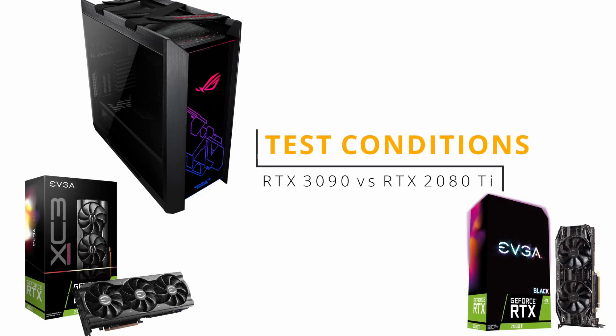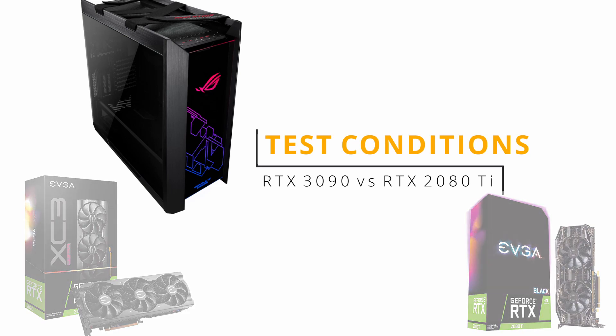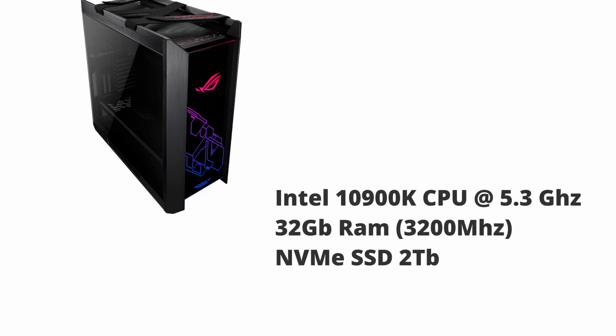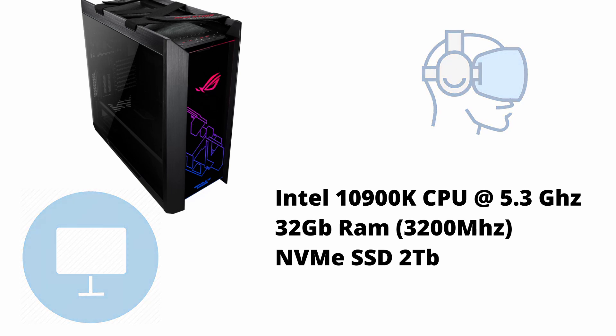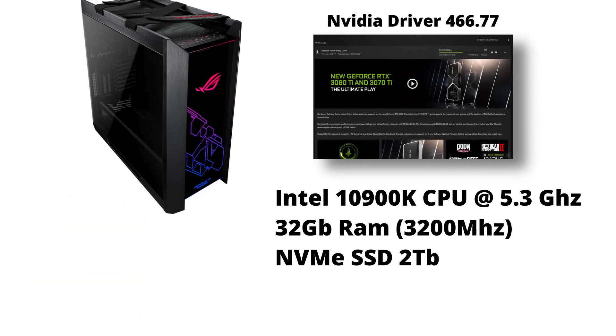With that done, let's move on to the test conditions and parameters applied. To ensure a like-for-like comparison, all conditions were the same for the 3090 and the 2080Ti. Both the CPU and the graphics cards are running at stock, for both the 2D and VR tests, as I felt this will give more realistic results, as not everybody overclocks their CPU or graphics card.